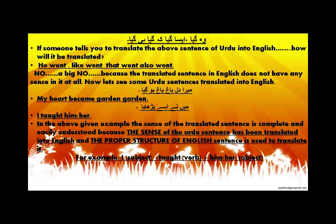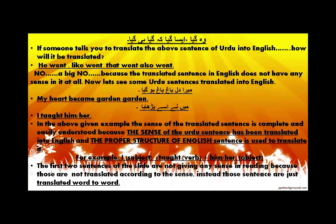For example, 'I' is the subject, the verb is the word, and 'him' or 'her' is the object of the sentence. The actual structure of an English sentence is subject plus verb plus object. Every time you translate any language into English, you have to place the subject, then the verb, and then the object. The first two example sentences were not giving any sense because they were translated word to word instead of according to the sense.